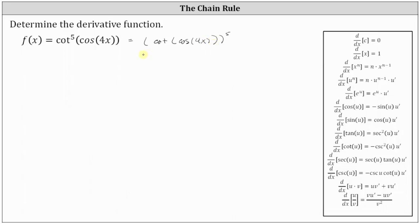In this form, we can see the outermost function is the power function, and therefore, to find the derivative, we'll be applying the power rule of differentiation with the chain rule, where the derivative of u to the power of n with respect to x is equal to n times u to the power of n minus one times u prime. We'll notice in our case, u is going to be the composite function of cotangent of cosine of 4x.